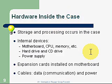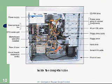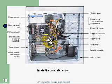Hardware inside the case: storage and processing occur in the case. Internal devices include the motherboard, CPU, memory, hard drive, CD drive, and power supply. Expansion cards are installed on the motherboard to provide additional functionality — for example, a video card plugged into an expansion slot gives output to a monitor. Cables can be either data cables for communication or power cables. Here's a typical inside view of a computer case. We can see a fan on top of the CPU, the expansion bus slots where expansion cards are installed, and cables running from the motherboard to the hard drive, CD-ROM, and other devices. The power supply at the top has many power cables running down.